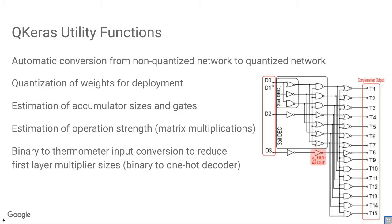QKeras provides several utility functions: automatic conversion from non-quantized to quantized networks, quantization of weights for deployment, estimation of accumulator sizes and gate counts, estimation of operation strength for matrix multiplication, and binary-to-thermometer input conversion. The binary-to-thermometer converter reduces the first-layer multiplier size by converting from binary encoding to one-hot encoding — either a full or partial conversion.